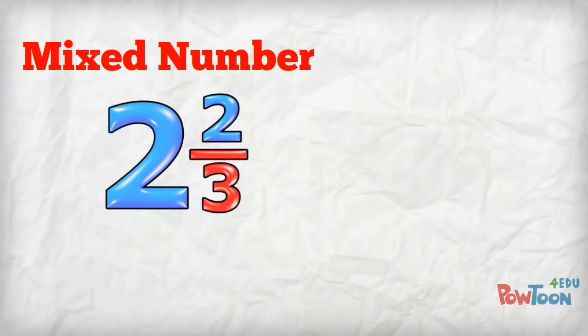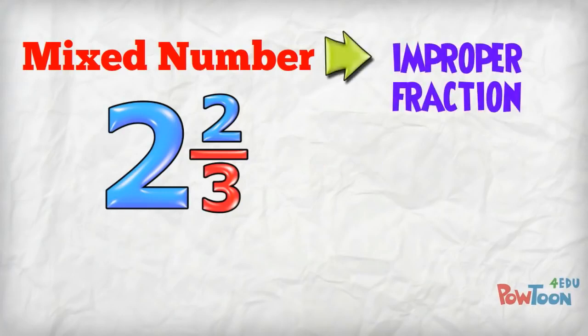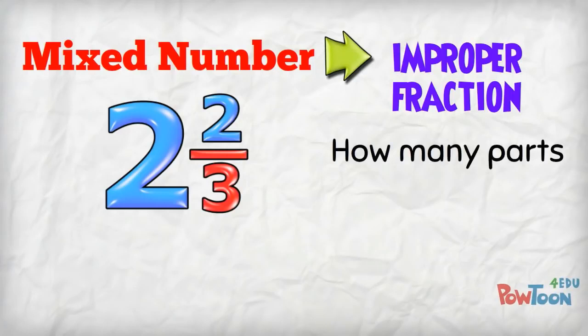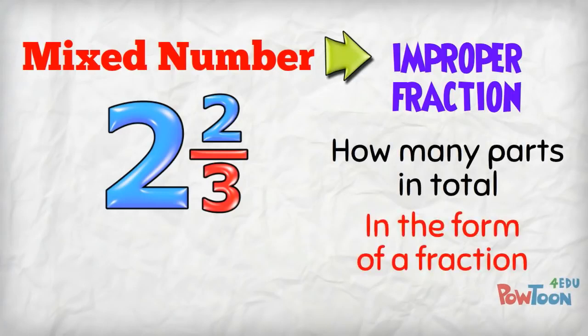When we change between a mixed number and an improper fraction, we're saying how many parts there are in total and we're giving that information in the form of a fraction.